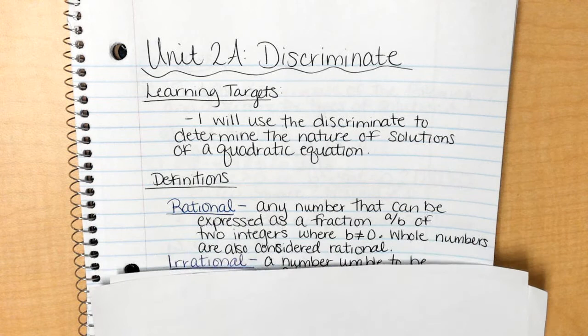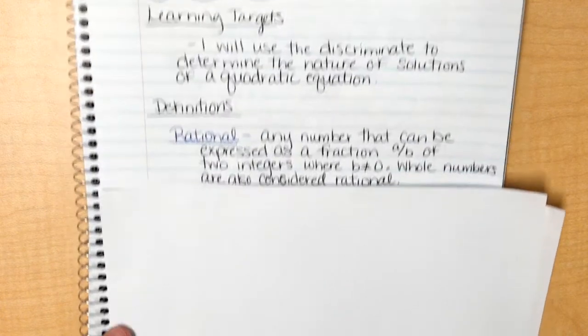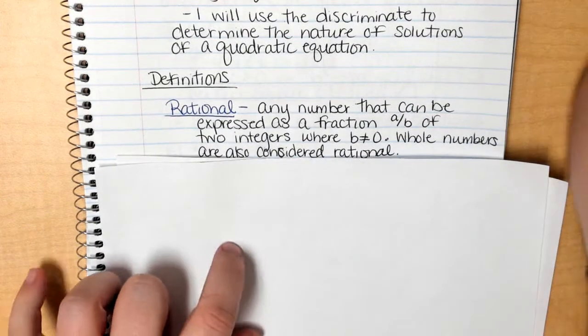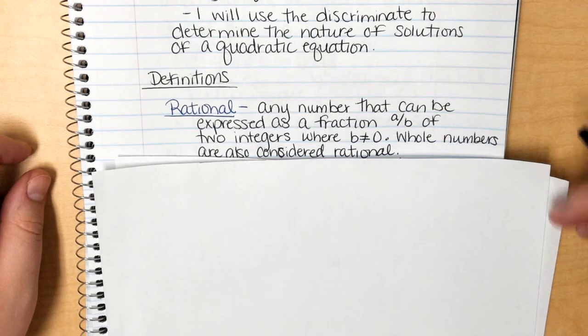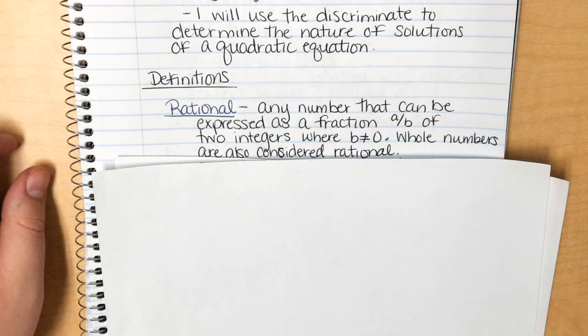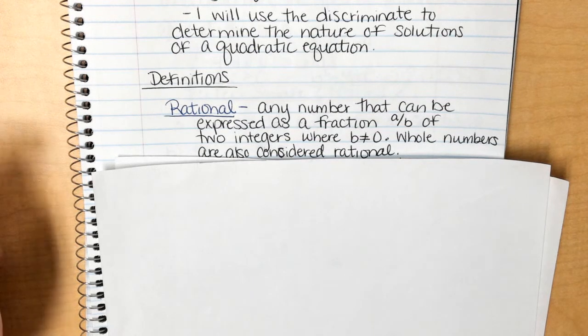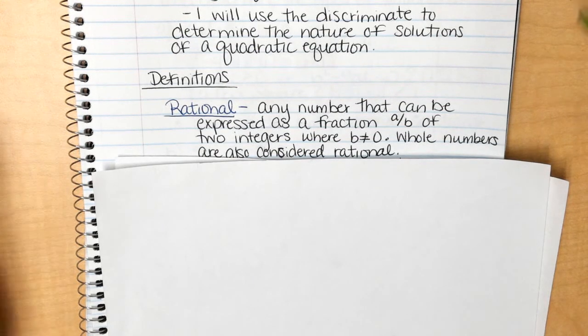Let's start with some definitions. The first definition is rational. It's a word you've probably heard before but we're not 100% sure what it means. Rational is any number that can be expressed as a fraction, a over b, of two integers where b is not allowed to be zero. So any fraction, so 3 over 7, 9 over 15.